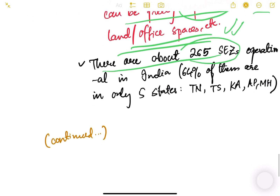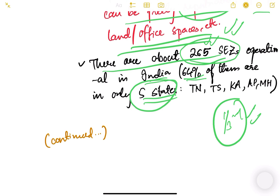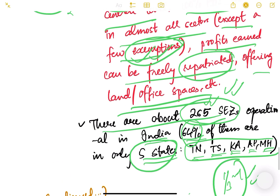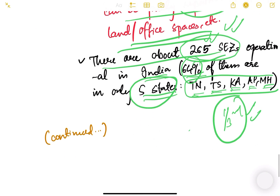There are about 265 operational Special Economic Zones in India. Notably, 64% of these are concentrated in just five states: Tamil Nadu, Telangana, Karnataka, and Maharashtra, highlighting significant regional inequality in this kind of economic activity. This is some background on the FTP 2015–20, and we will continue in the next video.